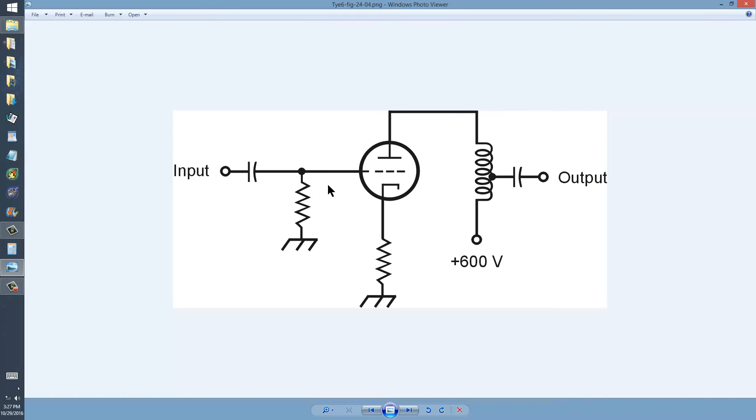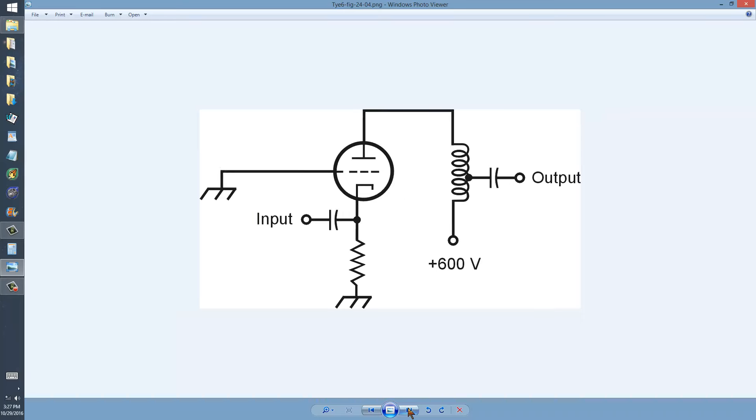And thirdly, the input impedance is quite high in the grounded cathode configuration, but it's relatively low in the grounded grid configuration.